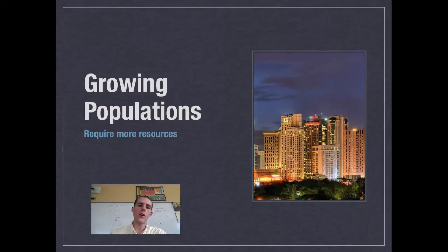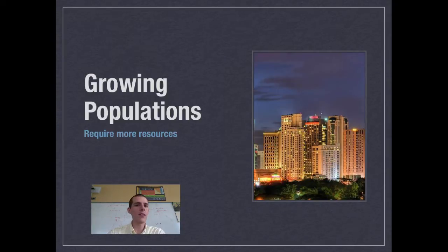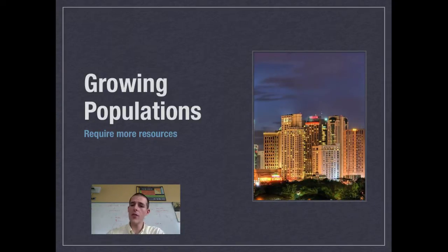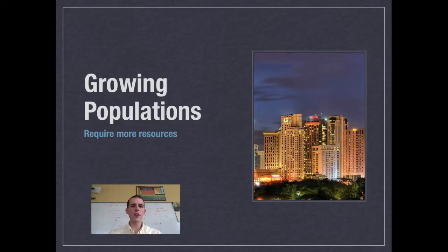First thing I want to talk about today is the impact of a growing population on the earth. More people means greater environmental impact. If you think about it, a person has needs — things like food, shelter, water, ways to stay warm, access to education, a way to get around. Every person you add to the earth is going to consume the resources they need to get by on a day-to-day basis. More people means greater environmental impact because each person requires resources that have to be taken from the earth.